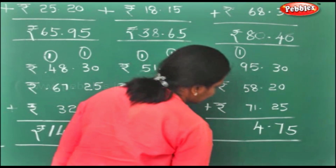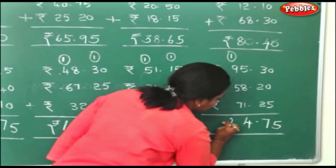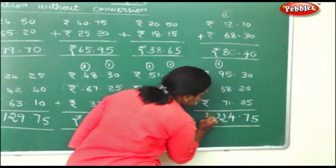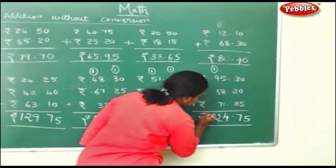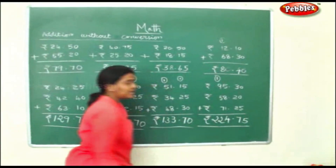17 plus 5: 18, 19, 20, 21, 22. So it will be rupees 224 and 75 paise.